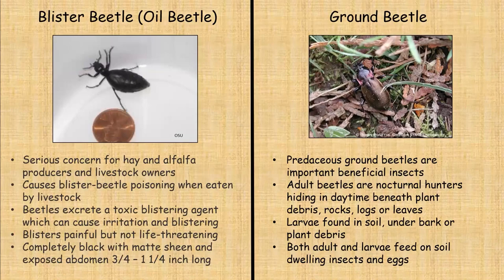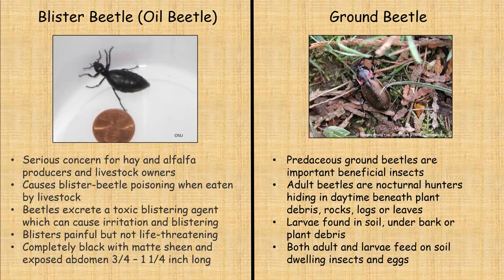Here is a pest that can be confused with a beneficial insect: the blister beetle, also called the oil beetle. It is a serious pest of hay and alfalfa producers and livestock owners, because it causes blister beetle poisoning when livestock eat it. These beetles can excrete a toxic blistering agent that, if it comes in contact with our skin, can be very irritating and cause painful blisters — though they are not life-threatening. The blister beetles are completely black with a matte sheen finish, and you'll notice the wing tips do not go all the way down to the abdomen. They are about three-quarters to one and a quarter inches long.